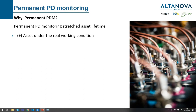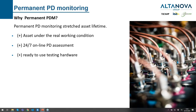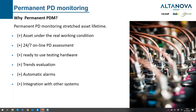Why should we install permanent monitoring? The asset works in real working conditions all the time and we have 24/7 online PD assessment. We also have the testing hardware ready to use if we want to perform a manual spot measurement. Suppose we want to investigate an alarm a little more — we already have everything in place, we just need to connect a laptop. We can have very good trend evaluation and automatic alarms.